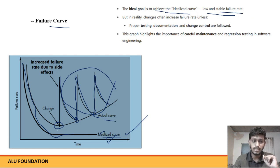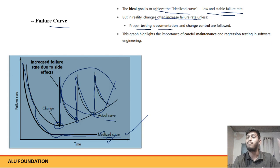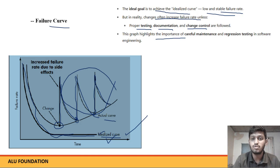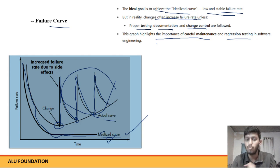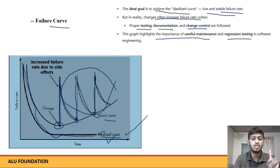Changes often increase the failure rate. The ideal goal is to achieve a low and stable failure rate. This graph highlights the importance of careful maintenance and regression testing in software. This is the failure curve.